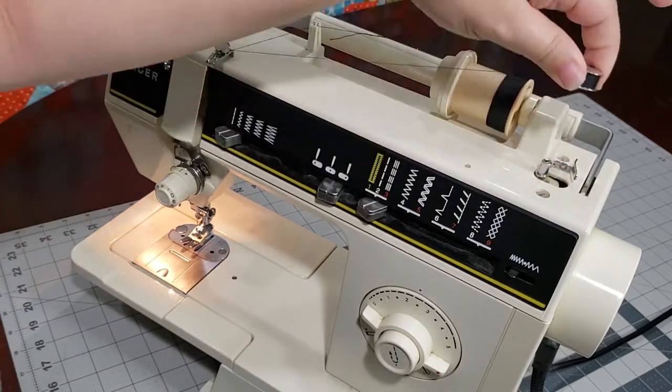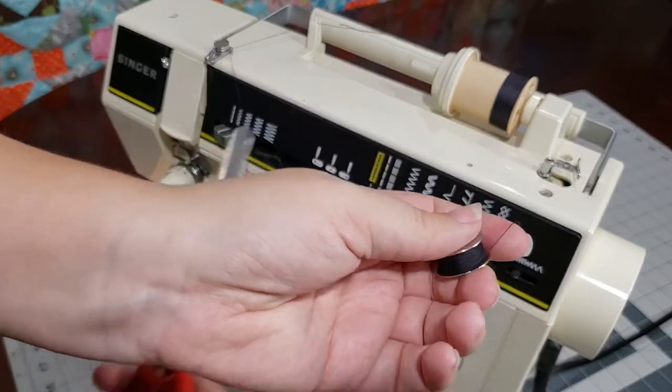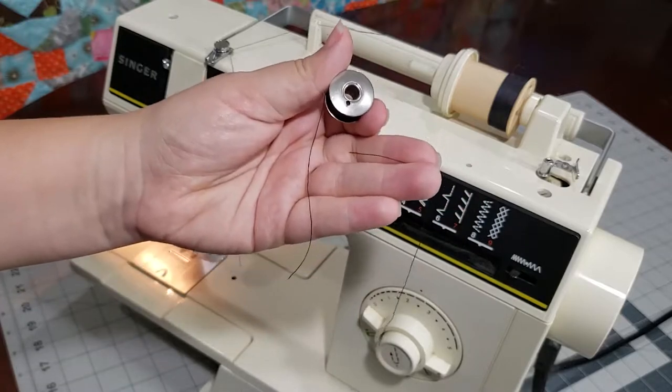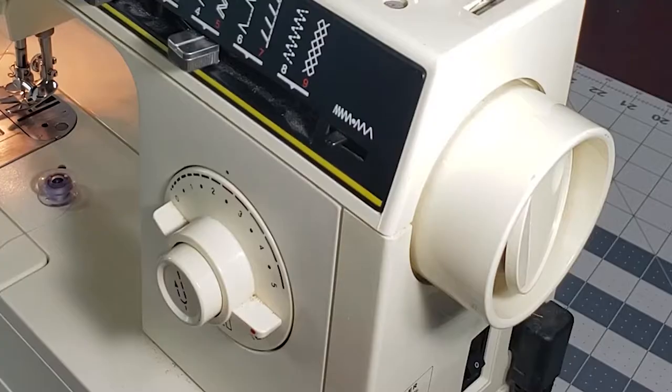Cut the thread and push the bobbin and spindle back to the left and remove it from the spindle. Trim the excess thread from the hole in the bobbin. Make sure to return the hand wheel back to the sewing position when you're done.